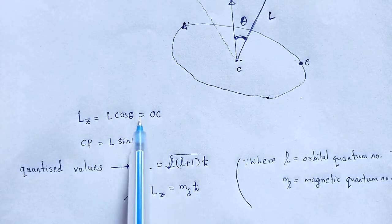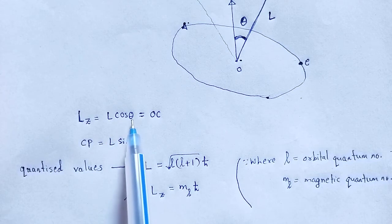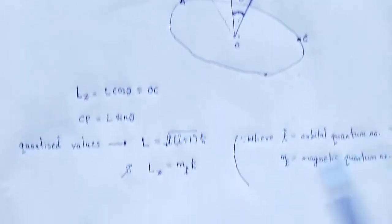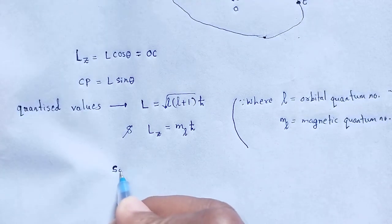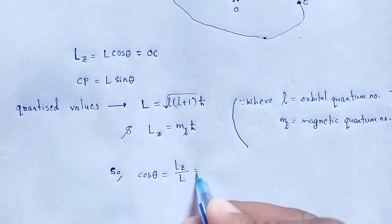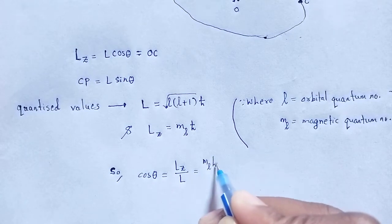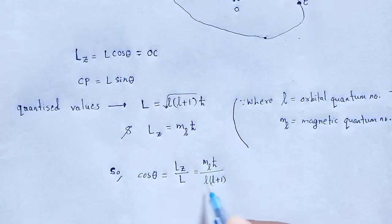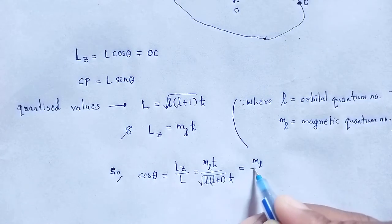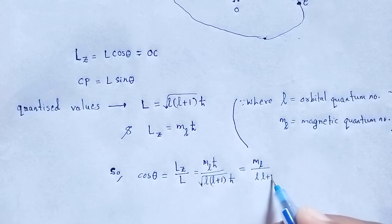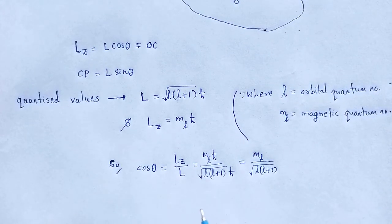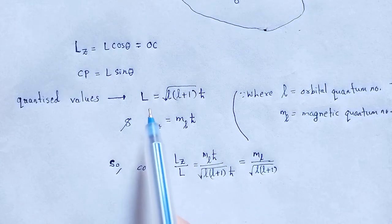Dividing these two, cos theta in that figure will be L_z divided by L. So cos theta equals L_z over L, which gives m_l × ℏ divided by sqrt(l(l+1)) × ℏ. The ℏ terms cancel out, thus cos theta equals m_l divided by sqrt(l(l+1)).